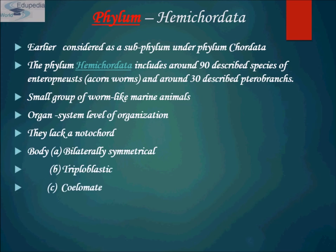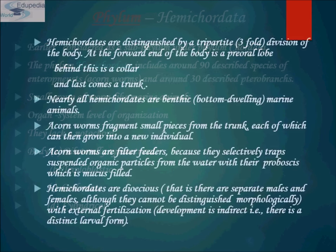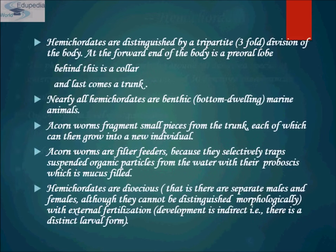Hemichordata have organ-system level of organization. They lack a notochord. The body is bilaterally symmetrical, triploblastic in nature, and cylindrical. Hemichordata are distinguished by a tripartite — that is threefold — division of the body. At the forward end is a pre-oral lobe known as the proboscis, just behind that is the collar, and the last part is the trunk.